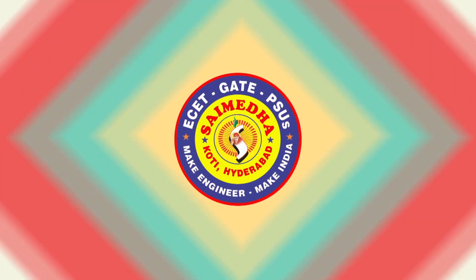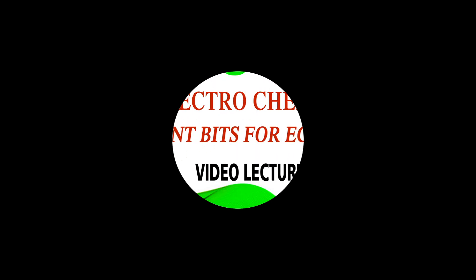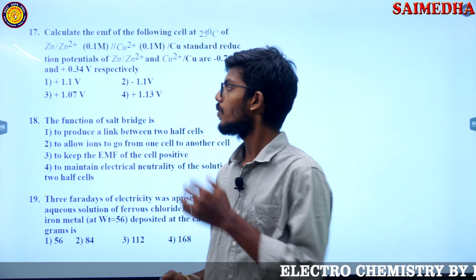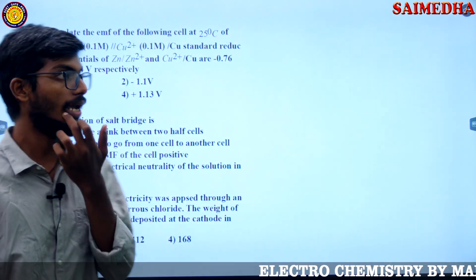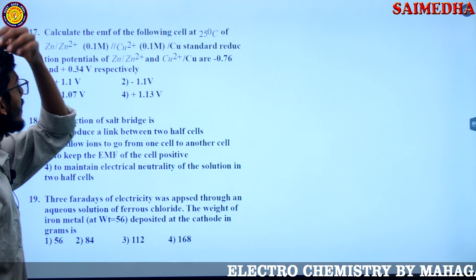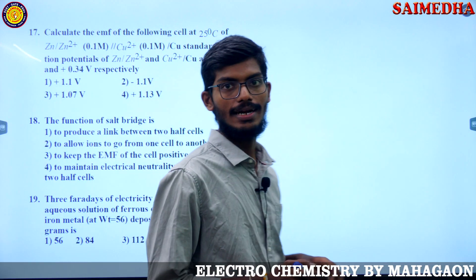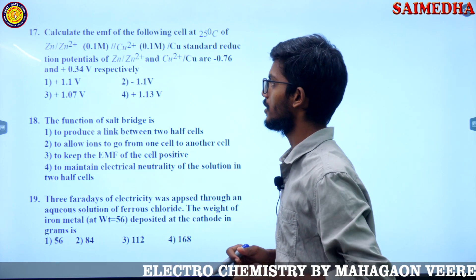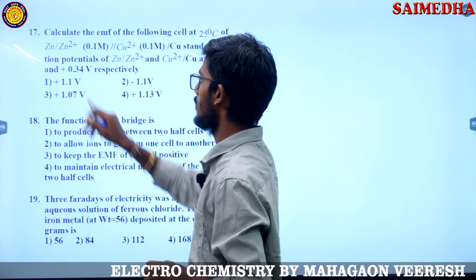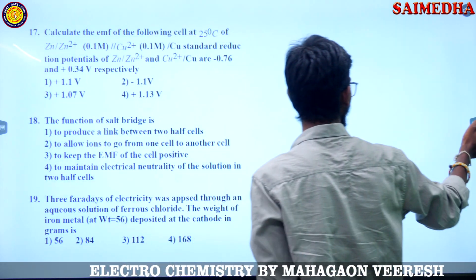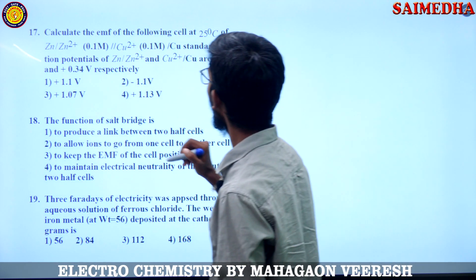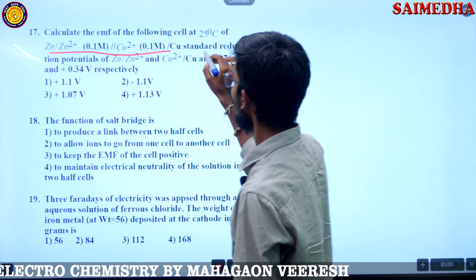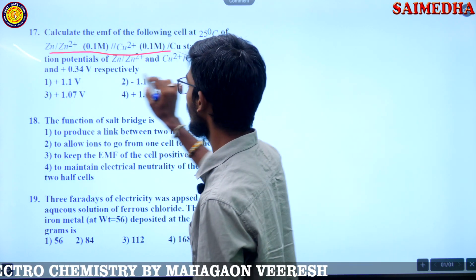Alright guys, let us continue with the next question. Calculate the EMF of the following cell at 25 degrees Celsius — a zinc and Cu2+ cell. He has given a zinc and copper system, and the standard reduction potentials are provided.